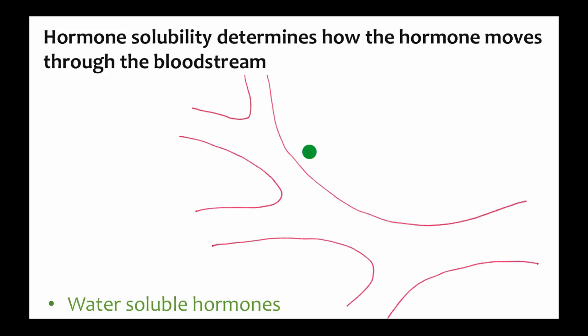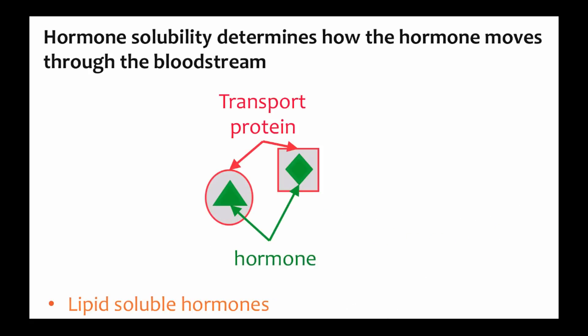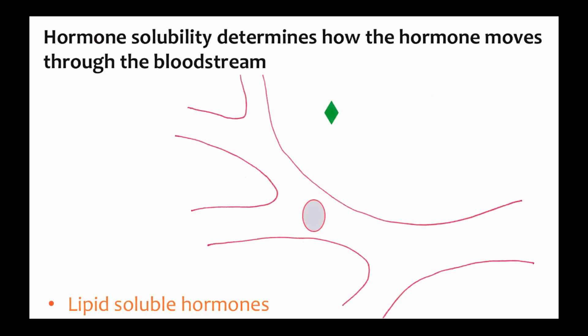How hormones move through the bloodstream is another difference. Water-soluble hormones are, of course, soluble in the aqueous plasma of the blood, so they just move along with the blood. Lipid soluble hormones, though, are also insoluble in the aqueous plasma, so they would just drop out of solution in the bloodstream. This problem is solved by the presence of transport proteins in the bloodstream. These transport proteins bind a particular steroid hormone and keep it soluble. So the steroid hormones move out of the endocrine cell into the bloodstream where they bind a transport protein, and then away they go.